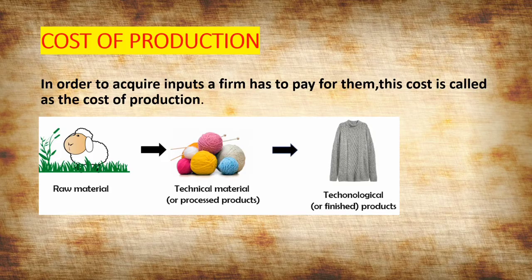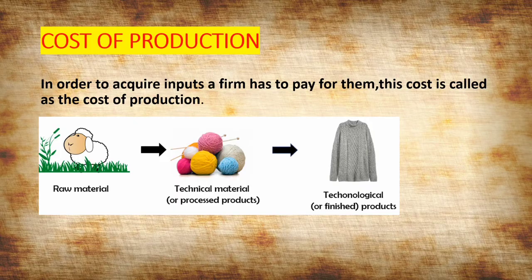To produce something, we need raw materials. Like you are seeing in the diagram, there is a sweater shown. To produce a sweater, we require wool as the raw material. First, we take wool from the sheep, as you can see in the image. Then we transform it into woolen thread, and finally into a full-fledged sweater. Whatever cost is incurred to make the sweater, that will be called the cost of production.